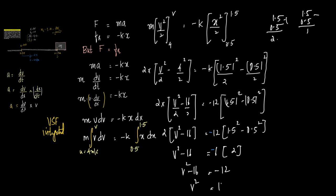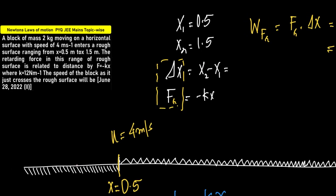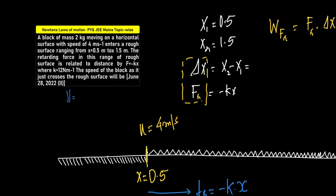So now what is v square minus 16 is equal to minus minus 12. And therefore, v square is equal to 16 minus 12. And v square is equal to 4, which gives us v is equal to 2 meter per second. Therefore, the correct answer here is that the speed of the block as it just crosses is v equal to 2 meter per second.